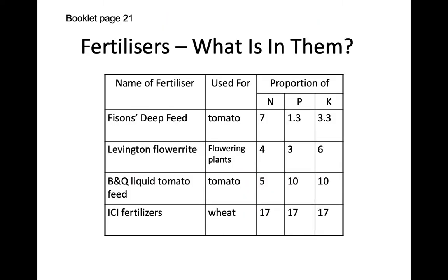On booklet page 21 you have a table showing a range of different fertilisers, from deep feed to B&Q liquid tomato feed. It gives you an example of what they're used for and the proportions of nitrogen, phosphorus and potassium in each. Pause the video now, turn to page 21 — or if you're working through an online document, open it up — and get this table filled in.